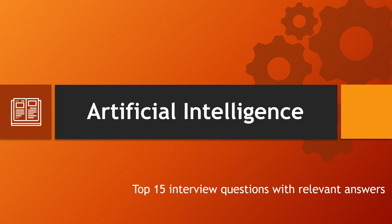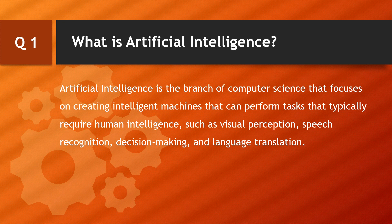Hello and good day everyone, welcome to my channel Fixing Knowledge. Today we are talking about top 15 interview questions with relevant answers on artificial intelligence. Let's begin. First question: what is artificial intelligence? It is called AI — it is the branch of computer science that focuses on creating intelligent machines that can perform tasks that typically require human intelligence.